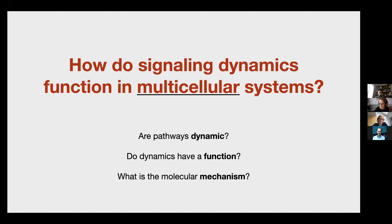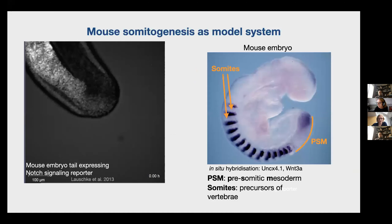The first step is that we quantify dynamics of signaling pathways and want to find out which pathways are dynamic at all. Then we want to understand what is the function of these dynamics. Finally, we aim to understand the molecular mechanism of how signaling dynamics encode information. To address this, we use mouse somatogenesis as a model system.